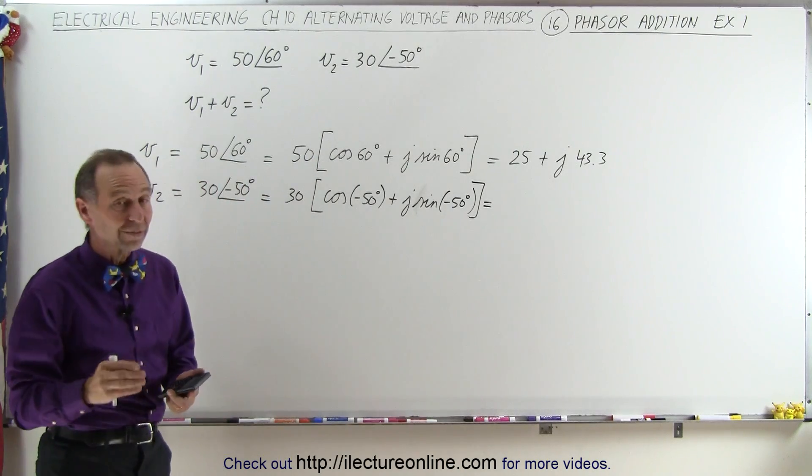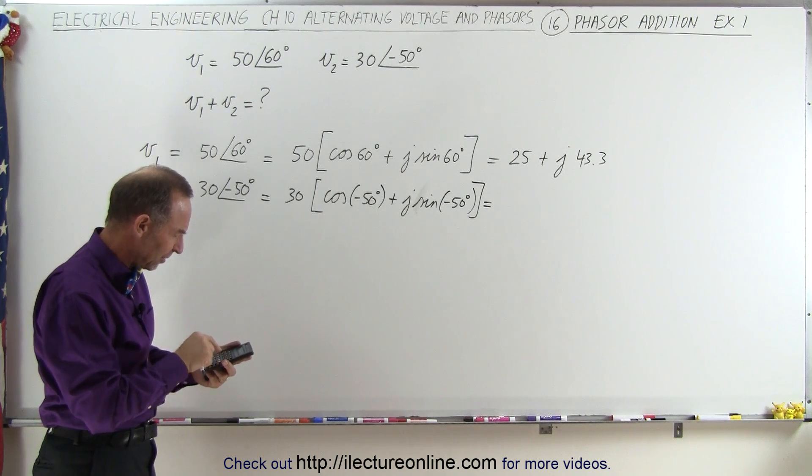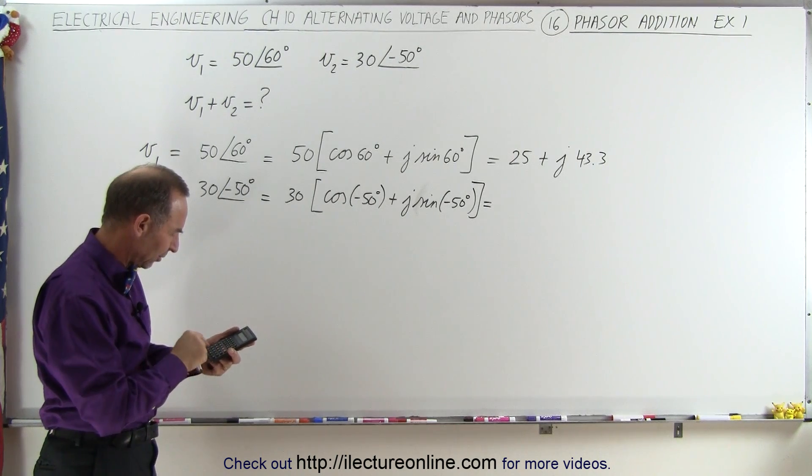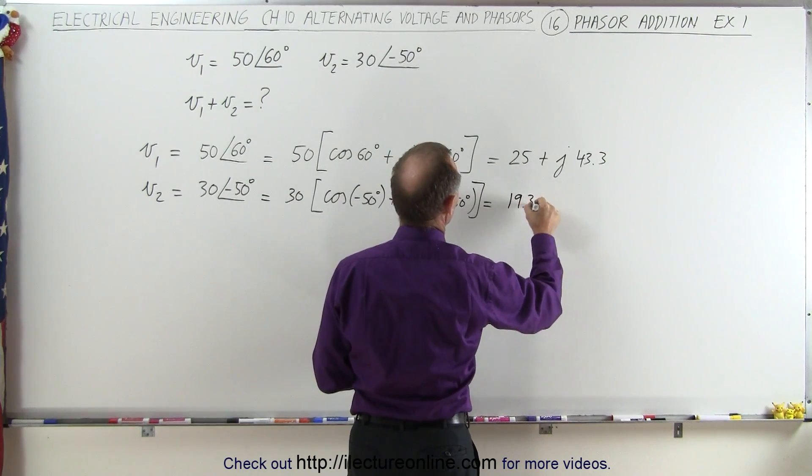The cosine of a negative angle is the same as the cosine of a positive angle, so take the cosine of 50 degrees and multiply that times 30, and we get 19.3.